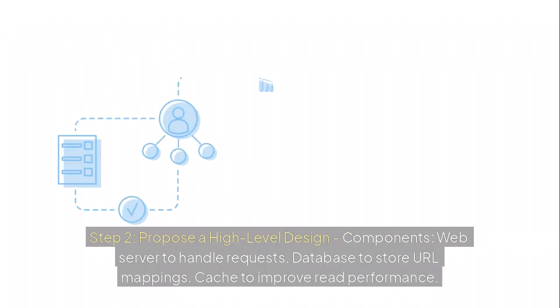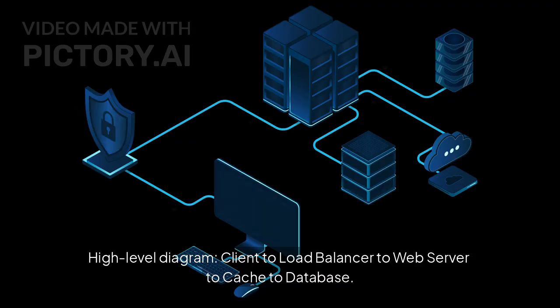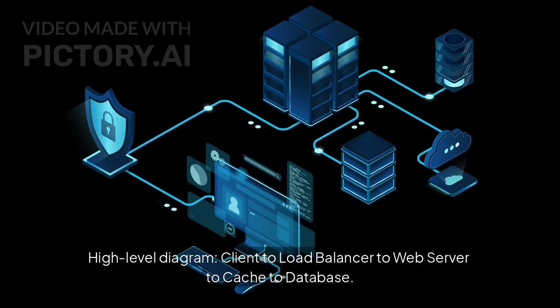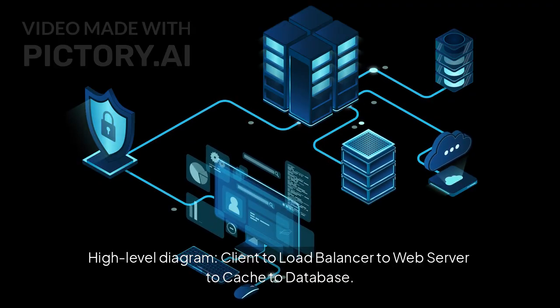Step 2: propose a high-level design. Components: web server to handle requests, database to store URL mappings, cache to improve read performance. High-level diagram: client to load balancer to web server to cache to database.